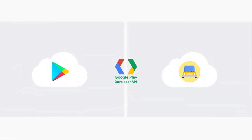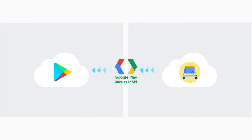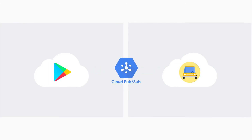For more information about how to set up Google Cloud PubSub, go here. Unlike the Google Play Developer API, which requires you, the developer, to send requests to Google, Cloud PubSub works the other way around, sending information from Google to you.